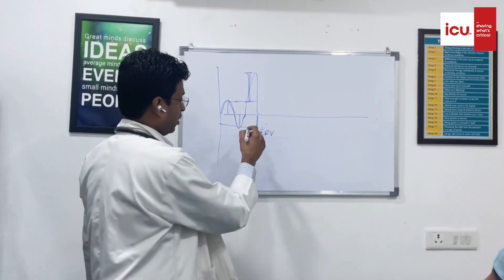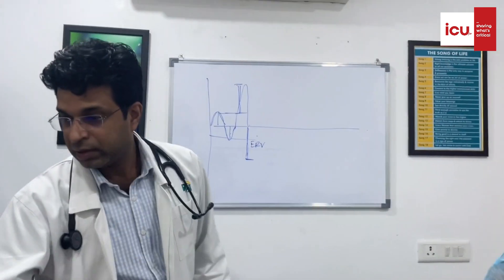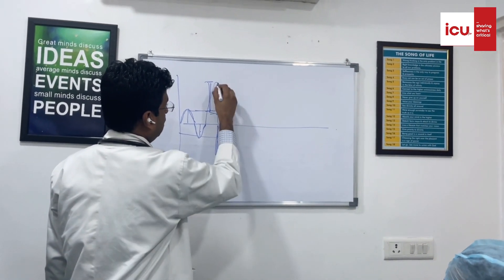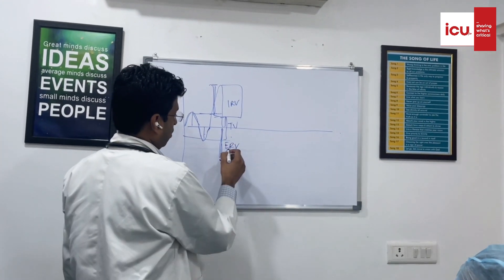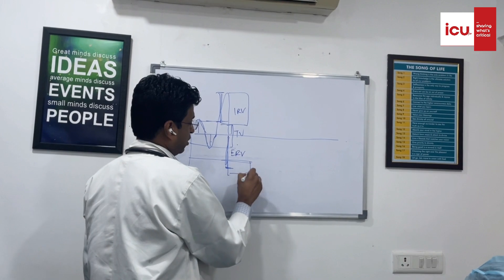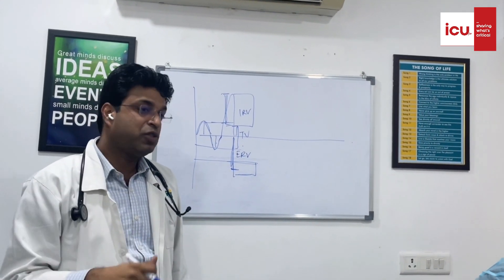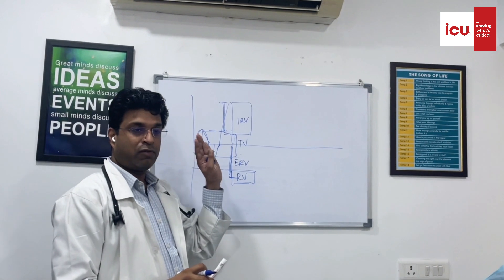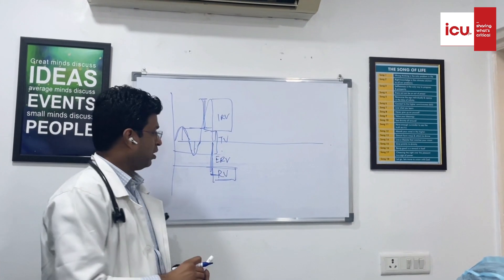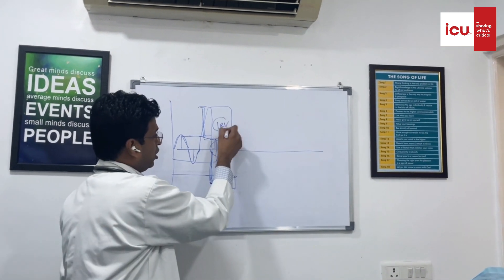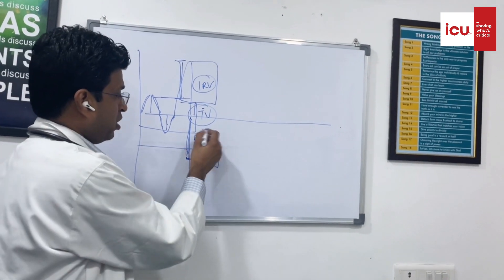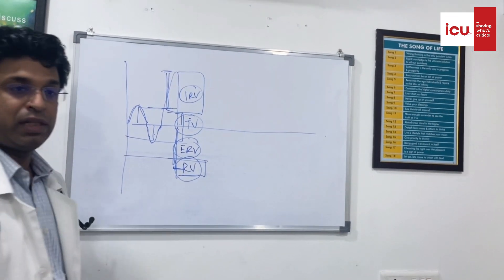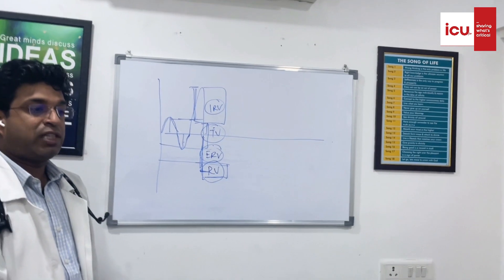Let me show the graph. This is expiratory reserve volume, this is your tidal volume, and this is your inspiratory reserve volume. Now even after exhaling, there remains a certain amount of air inside your lungs which you cannot exhale outside — this is called residual volume. So by these four volumes we can derive all other lung volumes.